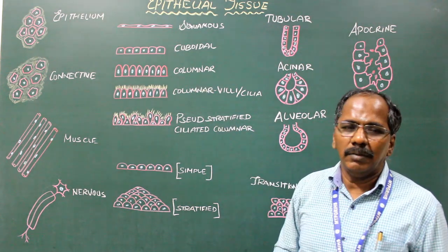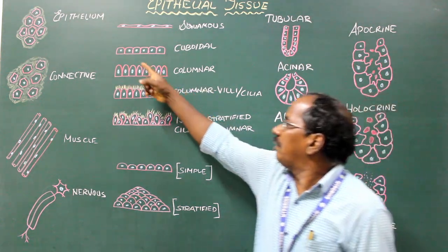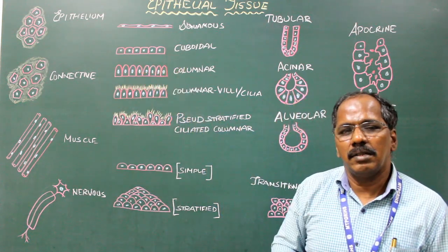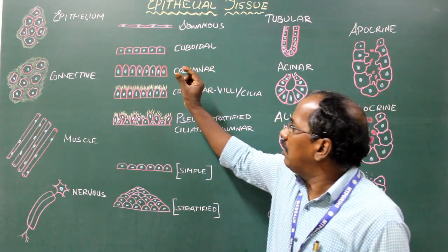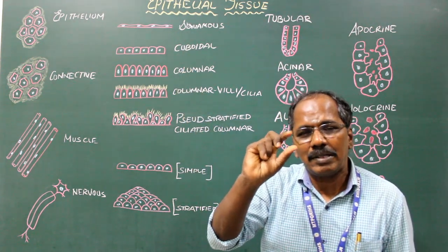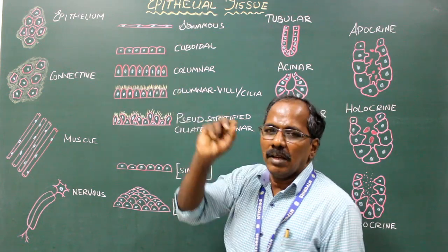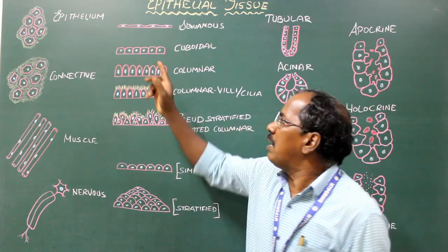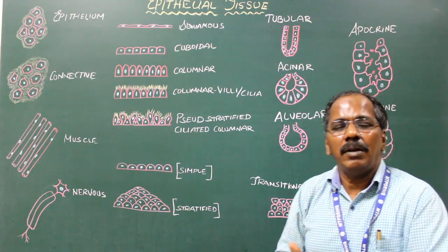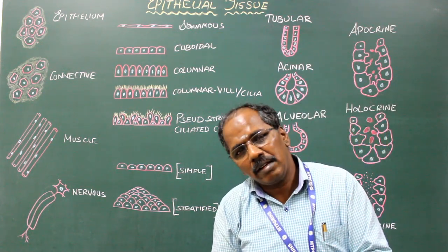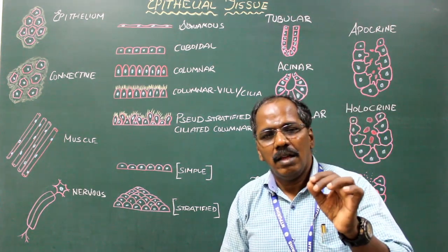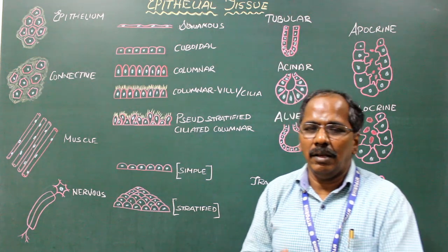Simple cuboidal epithelium consists of a single layer of cuboidal cells where the height and width of the cells are equal. The nucleus is round and centrally placed. Examples include the follicles of the thyroid gland and the epithelium lining the surface of the ovary, otherwise known as germinal epithelium.